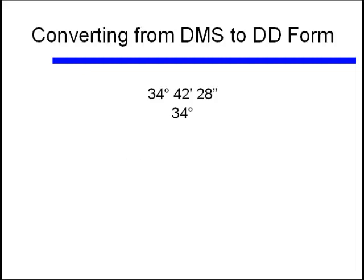Let's take this number as an example to demonstrate how to convert from DMS into decimal degree form. If I have 34 degrees, 42 minutes, and 28 seconds, I don't have to do anything to the 34 degrees, that is already in degree mode. But the 42 minutes, we need to convert into degrees.